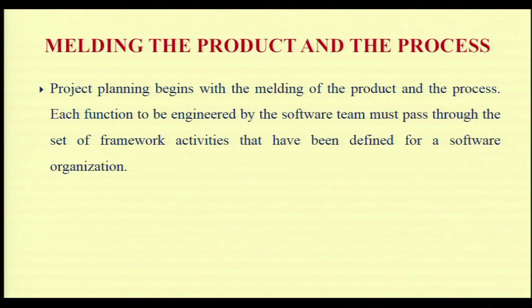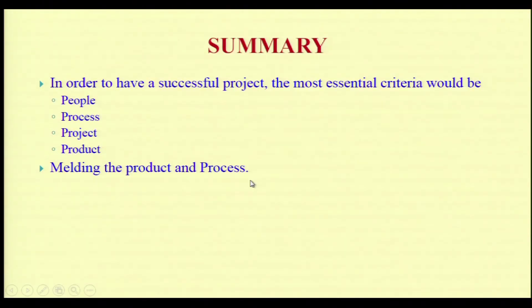Project planning begins with melding the product and the process. Each function to be engineered by the software team must pass through a set of framework activities defined for the software organization. In summary, to execute the project properly, management must support the four basic P's — people, process, project and product. We also looked at roles and responsibilities every person must fulfill during software development, and how to meld both process and product together, since processes are a sequence of activities that help in product development. Thank you.